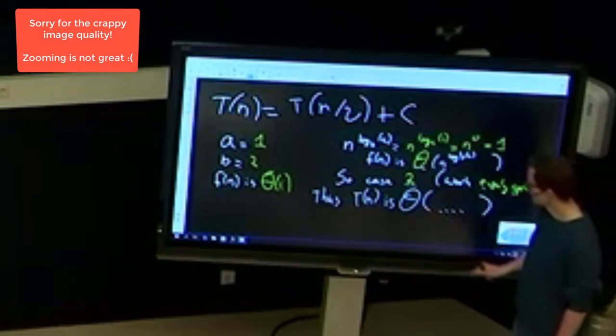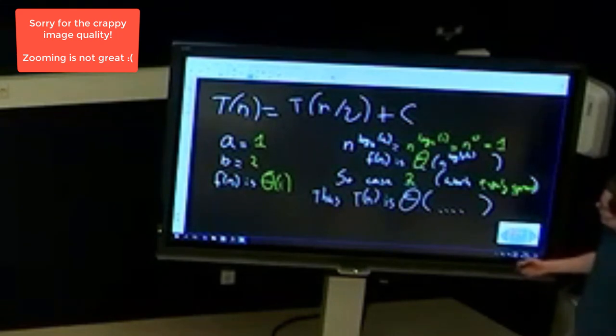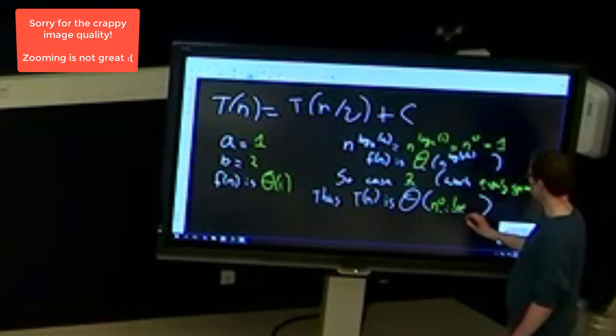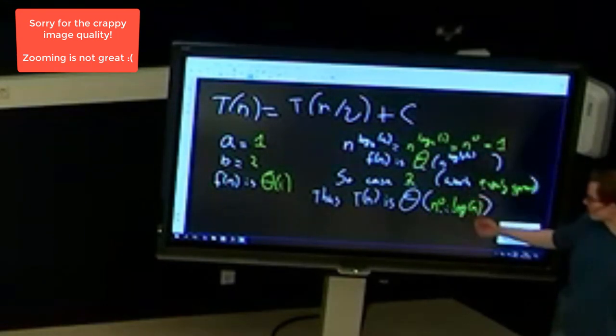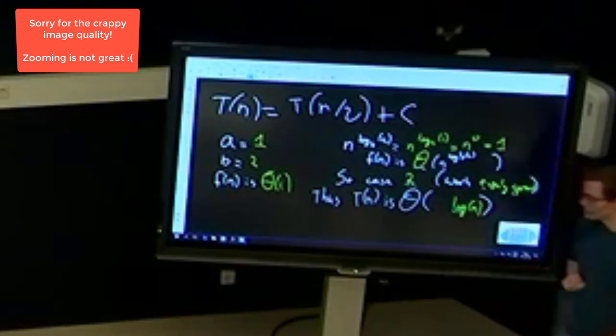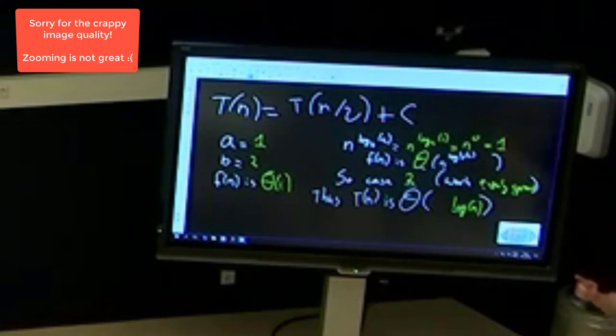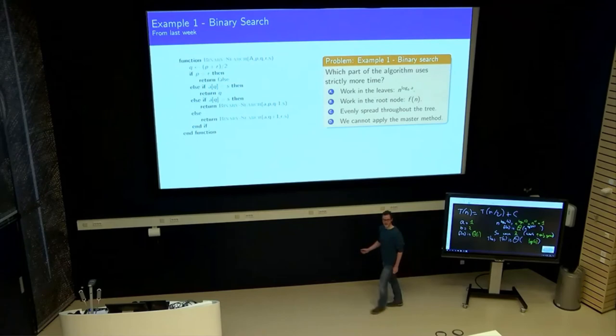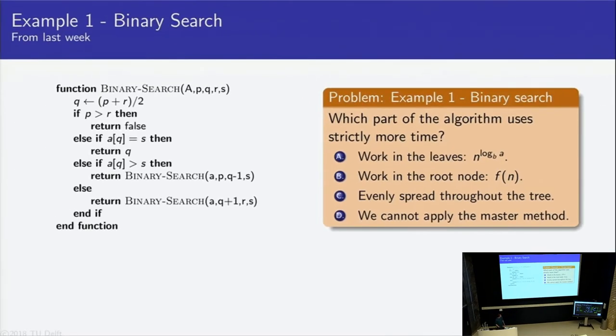Which means that f(n) is exactly that, so we are in case 2, where the work is evenly spread. And as a result, T(n) was, when the work was evenly spread, it was the work in the leaves, so n to the power 0 times log n, but n to the power 0 was just 1, so log n work. That matches exactly what we found last week. Well, hopefully we did it right then. So let me put up my slide with the different cases once more so that you can check that I did it right.